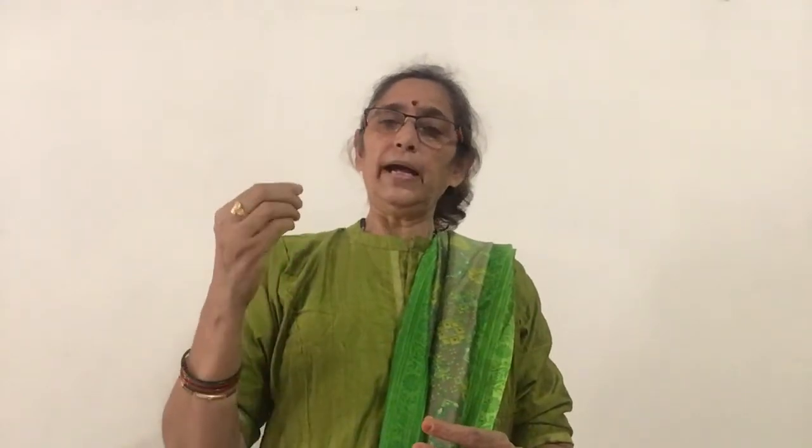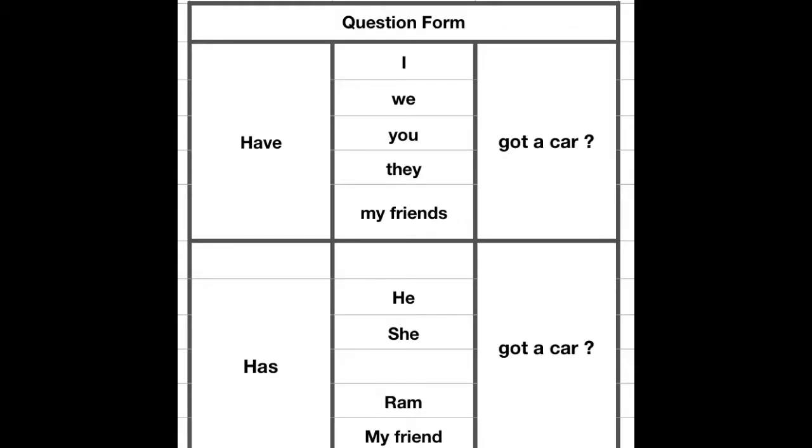Now let's look at how to make questions. We can say: 'Have you got a car?' The 'have' and 'has' come first. To make questions, have or has comes at the beginning of the sentence. For example, for I, we, you, they — 'Have I got a car? Have we got a car? Have you got a car? Have they got a car? Have my friends got a car?' And for third person singular, we say: 'Has he got a car? Has she got a car? Has your friend got a car? Has Ram got a car?' This is the way we make questions with have and has.